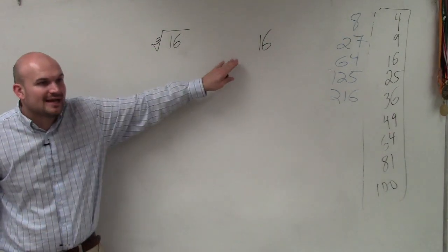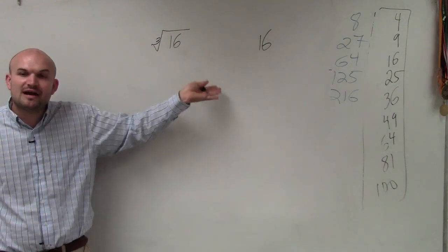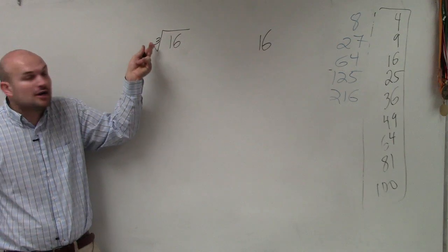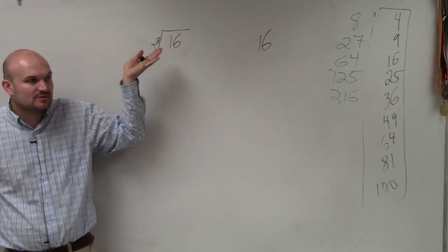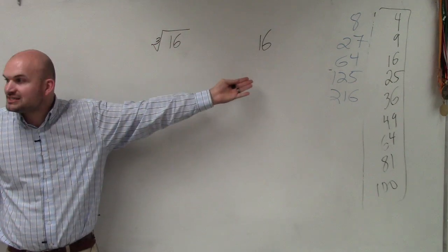Because guys, it doesn't matter. If you have your radicand, use a factor tree to write it as prime factors. It doesn't matter if it's the cube root, the fifth root, the sixth root. You're always going to want to come from the same factor tree.